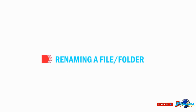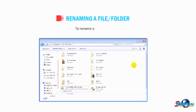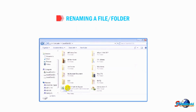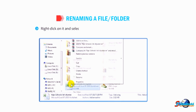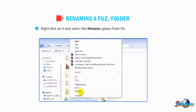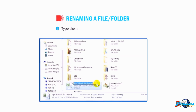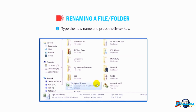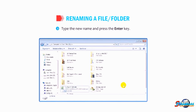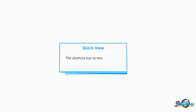Let us find out how to rename a file or folder. Right-click on it and select the Rename option from the shortcut menu. Type the new name and press the Enter key. The shortcut key to rename a file or folder is F2.